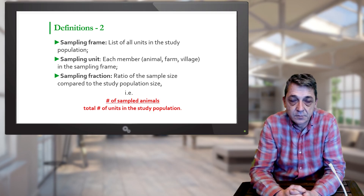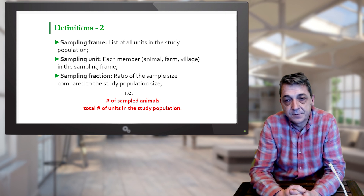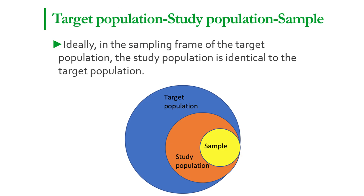In the ideal world, we would have a sampling frame of the target population where the study population is identical to the target population. This means that we would have a complete list of sampling units of the target population — the population of interest — where the study population from which the samples are drawn is identical to the target population.